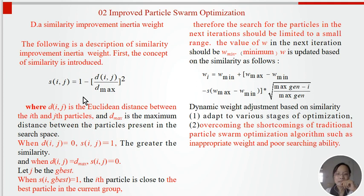The following is a description of similarity-based improved inertial weight. First, the concept of similarity is introduced, where D_ij is the distance between i and j particles, and D_max is the maximum distance between the particles present in the search space. When D_ij is 0, S_ij is 1, indicating greater similarity. And when D_ij is maximum, S_ij is 0. Let j be the G_best. When S_ig is 0, omega is 1. The i-th particle is close to the best particle in the current group. Therefore, the search for the particles in the next iterations should be limited to a small range. The value of omega in the next iterations should be omega_min. Omega is updated based on the similarity as follows.